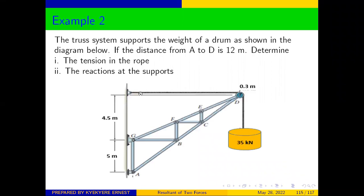The truss system supports the weight of a drum as shown in the diagram below. If the distance from A to D is 12 meters, determine: (i) the tension in the rope, and (ii) the reactions at the support. This is our diagram.